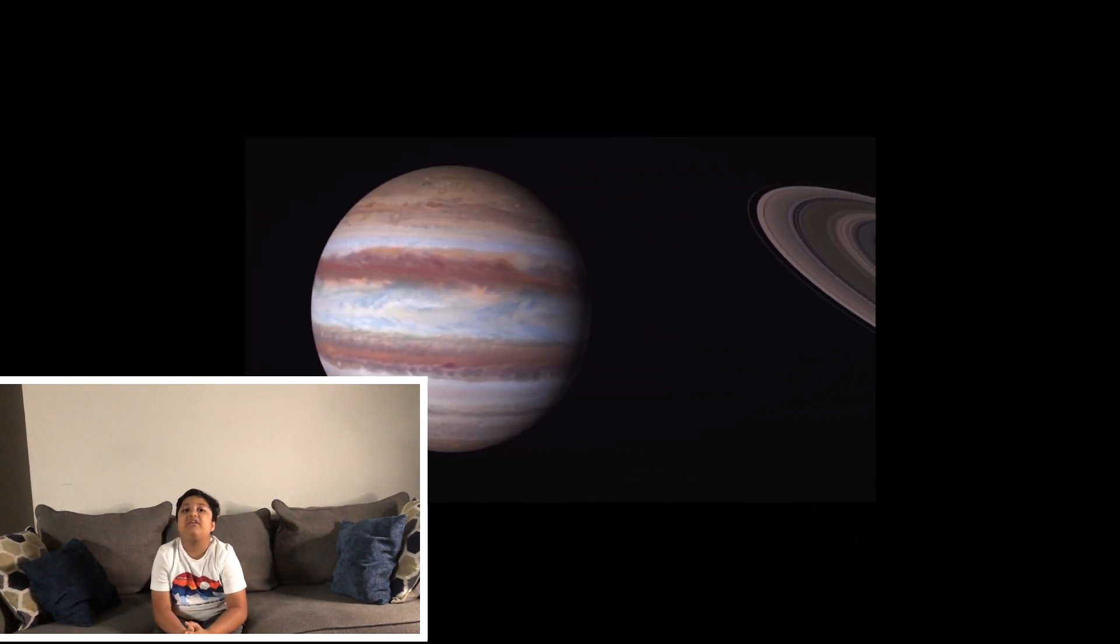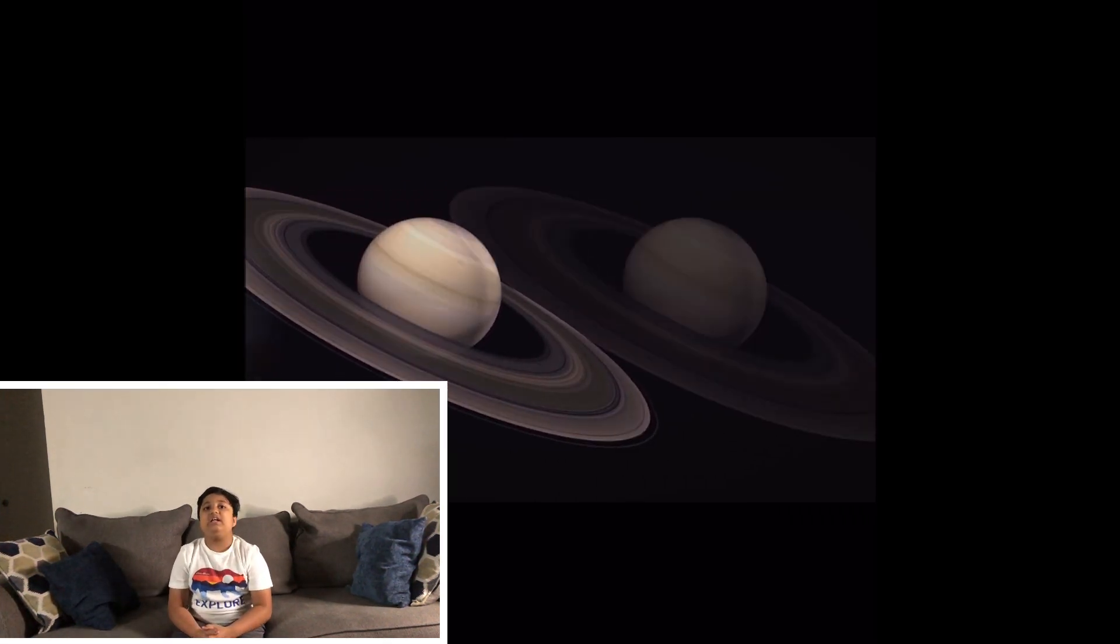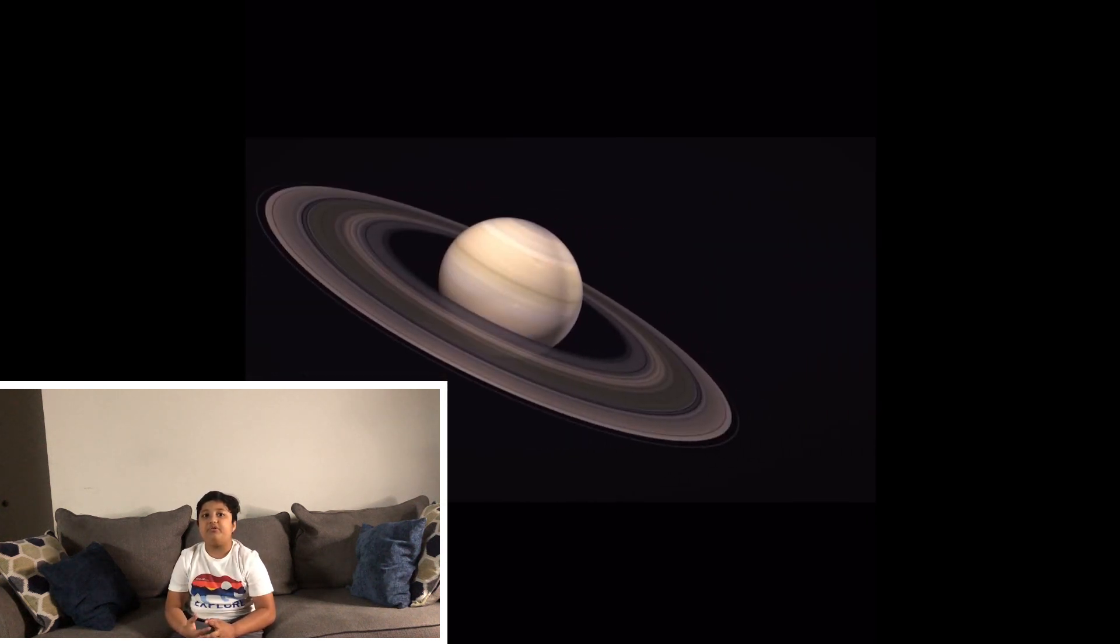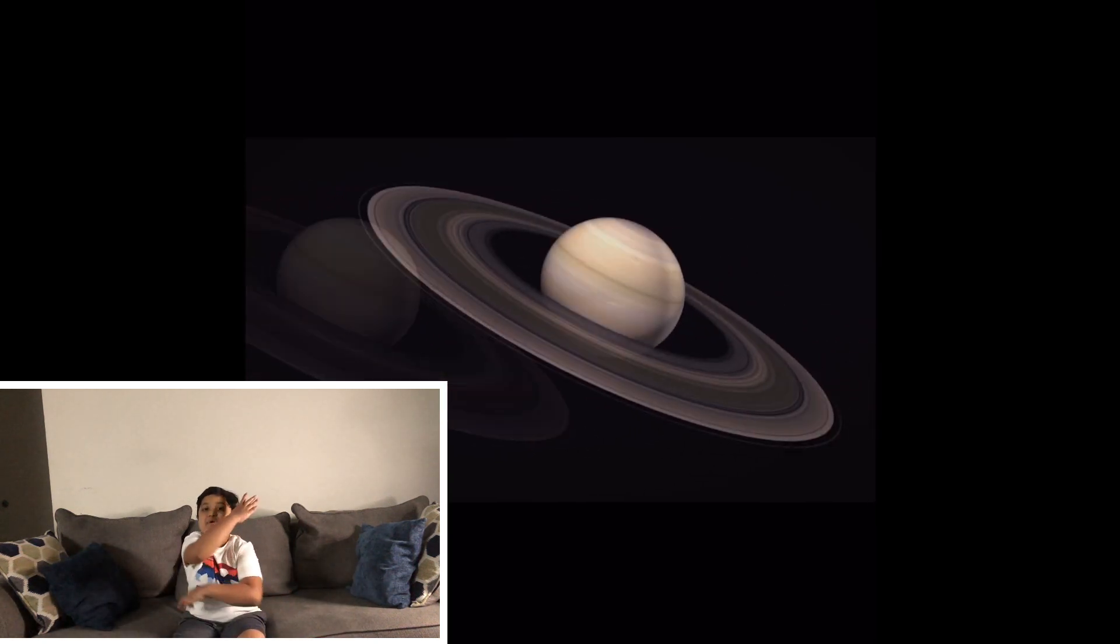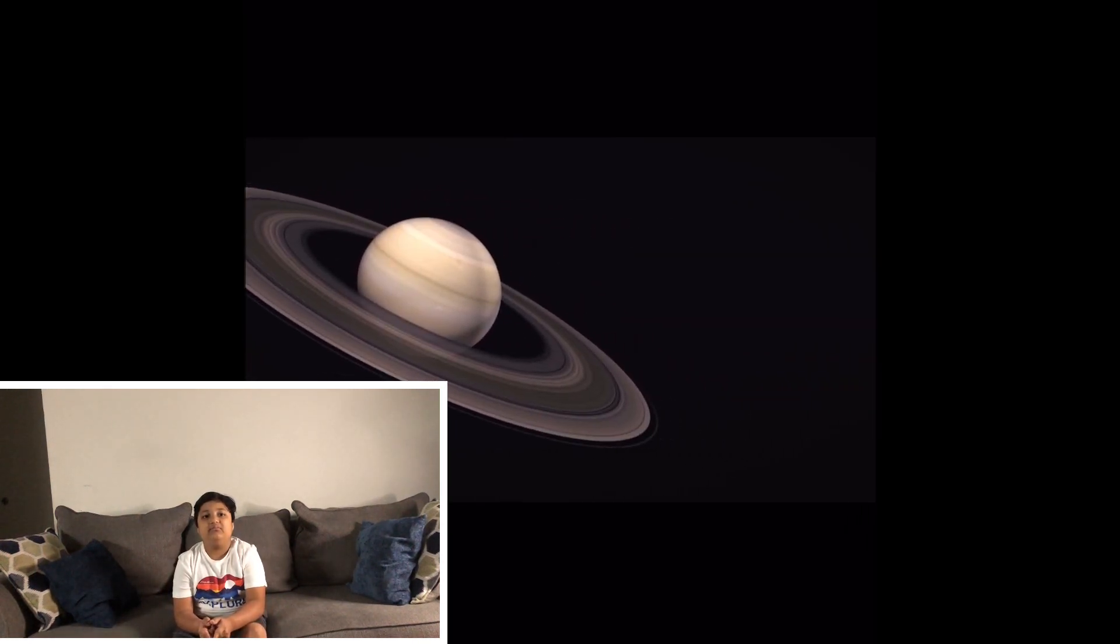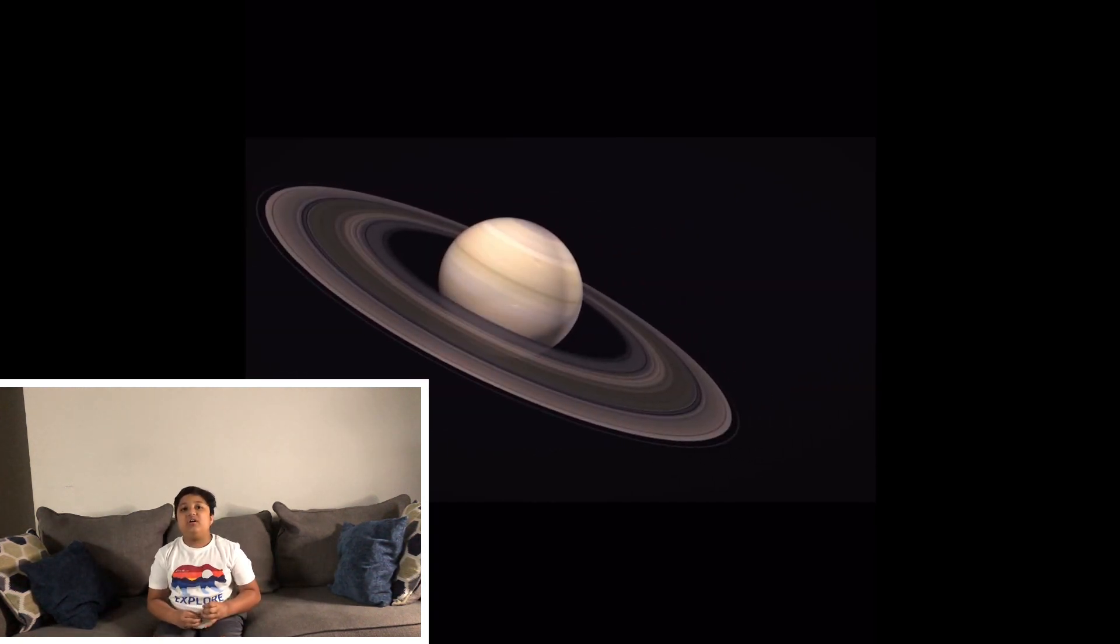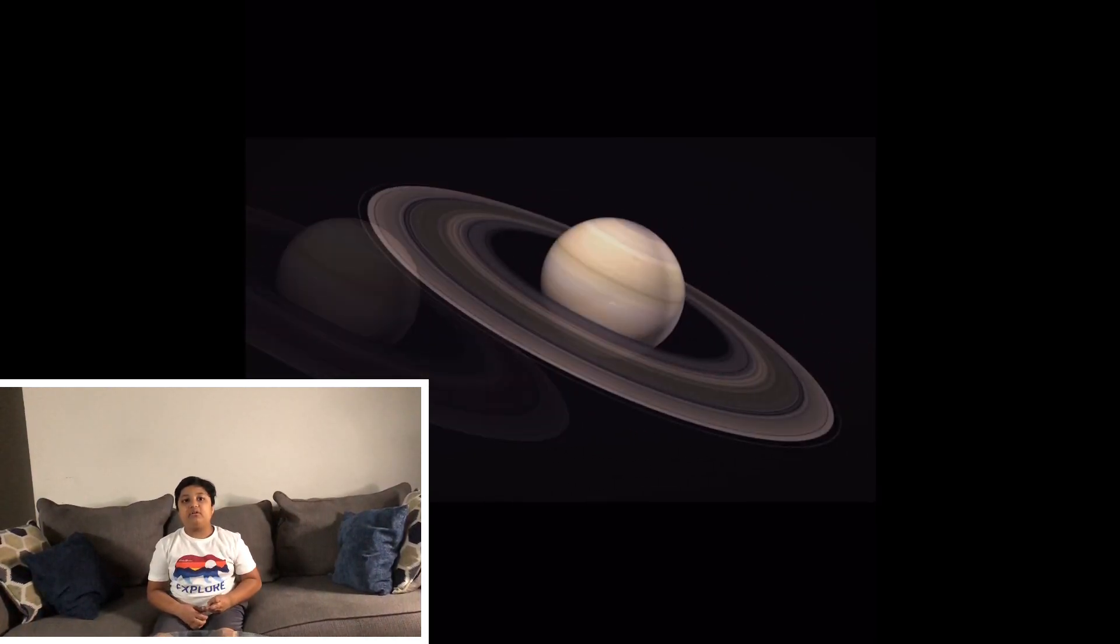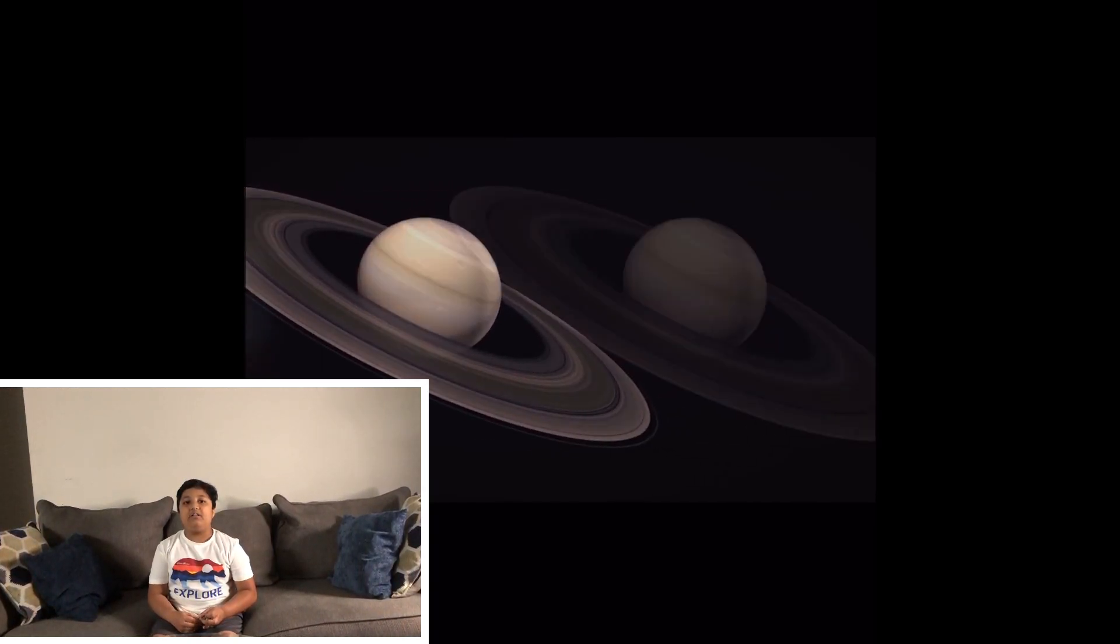After Jupiter comes Saturn. It's the sixth planet from the Sun. It's made of gas too, like Jupiter, and it has a lot of moons and it even has beautiful rings. It has seven rings. The rings from a far distance look like they're plain and solid, but from a very close look they look like bits of rock and comets.